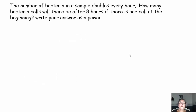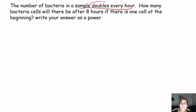Let's try a word problem. The number of bacteria in a sample doubles every hour. How many bacteria cells will there be after eight hours if there is one cell at the beginning? Write your answer as a power. Pause the video and try it out. As I look at this problem, my sample's doubling every hour. You start with one cell at the beginning, and I want to know how many cells will be there after eight hours — make sure you write that final answer as a power.